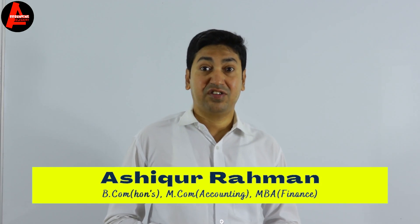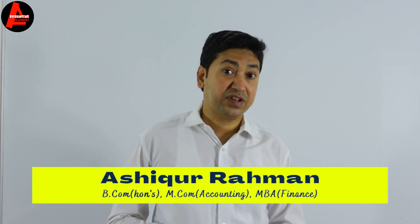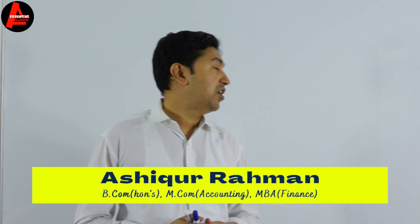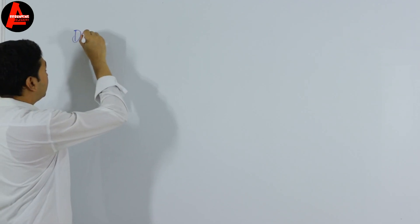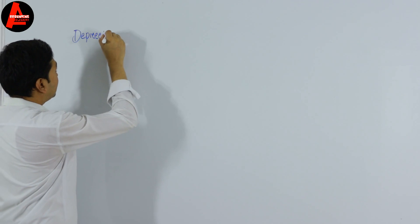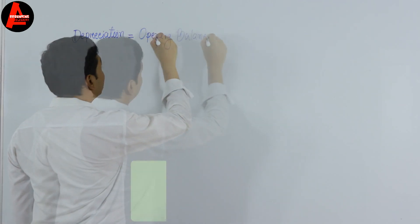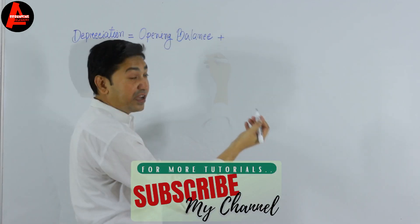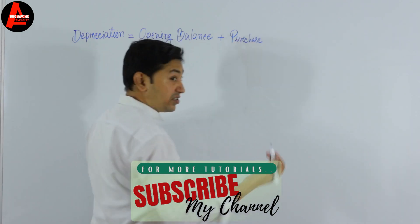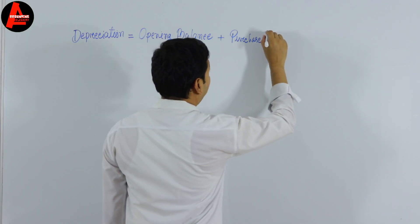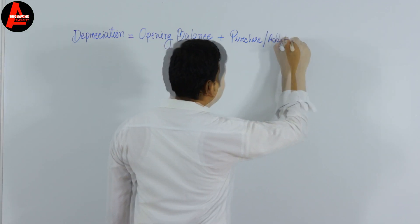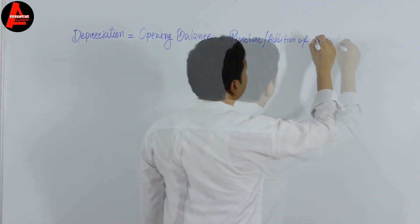We also have a question taken from a level accounting past papers, and I will show you how to calculate it. So let us know the formula first. The revaluation method of depreciation equals opening balance plus purchase of new assets — meaning fixed assets, non-current assets, or additions of non-current assets.